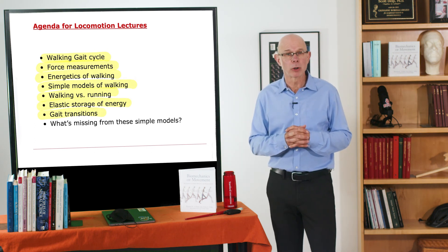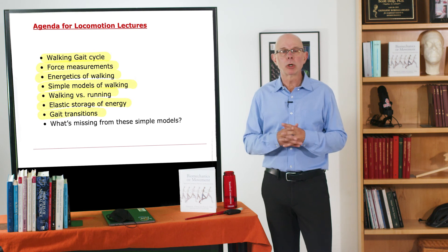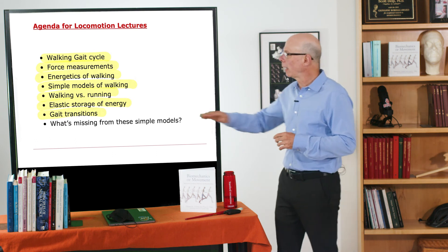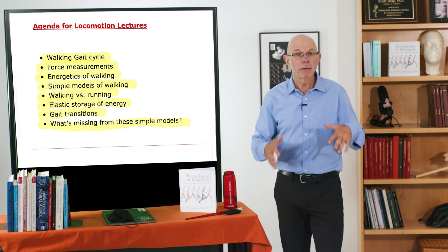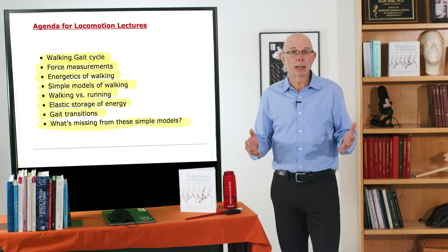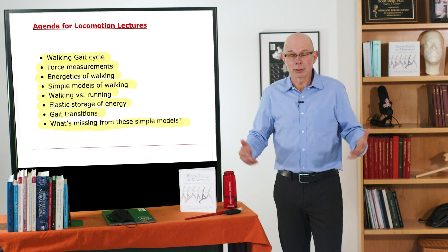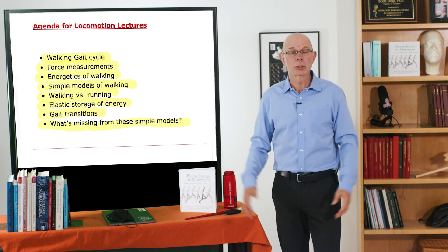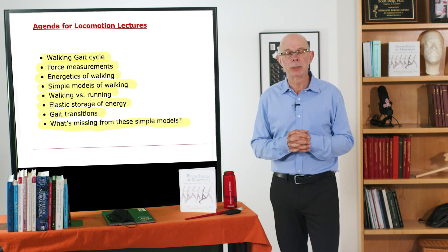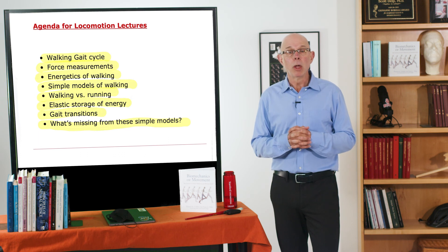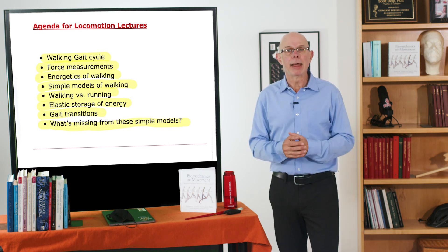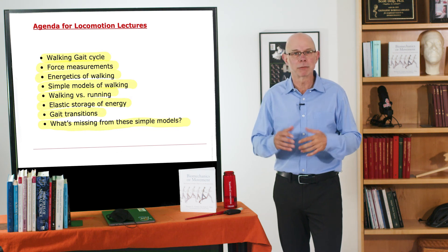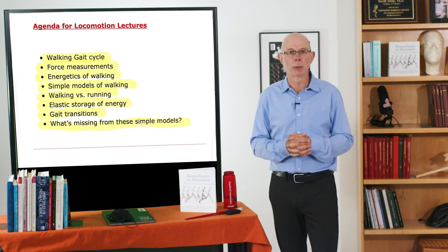Now, you'll notice that these models are very simple. So, we'll conclude this series of lectures by talking about what's missing from these simple models. You may have noticed at the outset that what's missing is a lot of things: a torso, a head, arms, but critically important, what's missing is muscle. We will first use these simple models. We'll see what's missing. And then that will lead us to discussions of muscle and muscle-actuated locomotion.